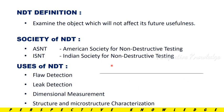The definition: to examine an object in a way that will not affect its future usefulness. If there is an object and a component, we will test the properties and defects. Non-destructive testing has two types of societies: ASNT and ISNT, two different standards. ASNT is the American Society for Non-Destructive Testing. ISNT is the Indian Society for Non-Destructive Testing.